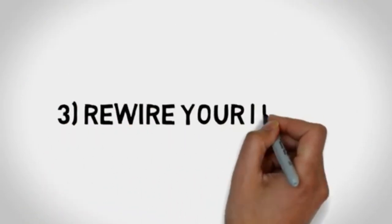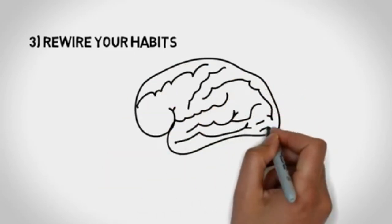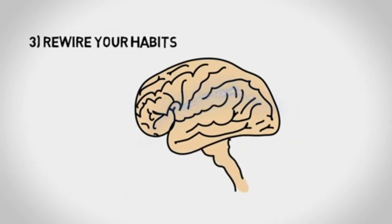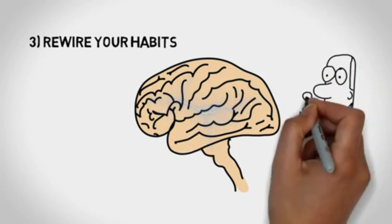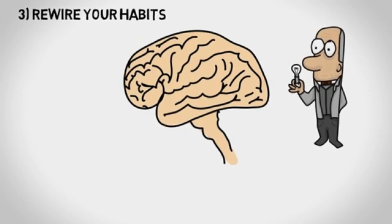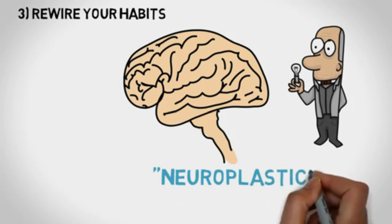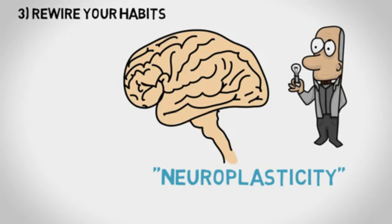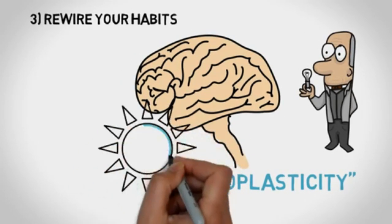Let's move on to number 3. Rewire your habits. Over the past 20 years, scientists discovered that neural pathways of your brain change over time. The brain is dynamic, not fixed as everyone previously believed. They named this idea that our brain architecture can change, neuroplasticity. This supports the idea that regular positive thoughts and acts can rewire your brain towards positivity.